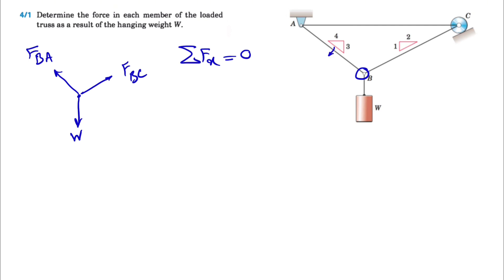Looking at the left member, we can find the hypotenuse of 5 using the Pythagorean theorem. For the other one, we have the square root of 2 squared plus 1 squared, which is the square root of 4 plus 1, giving us the square root of 5. So the X component of FBC is FBC times 2 over the hypotenuse, which is the square root of 5. Since it's pointing to the right, this will be the positive X component.